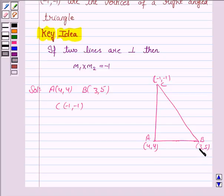That means we need to prove that the product of the slope of AC and AB is minus 1. So we first find the slope of AB, which we find by the formula Y2 minus Y1 upon X2 minus X1. Here, Y2 is 5, Y1 is 4, upon X2 minus X1, that is 3 minus 4, and this is equal to 1 upon minus 1, that is minus 1.